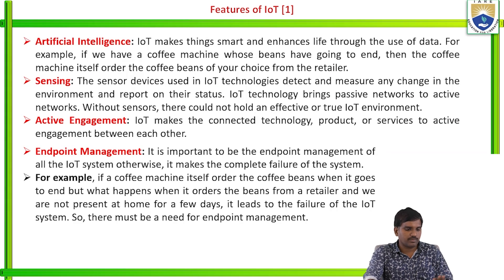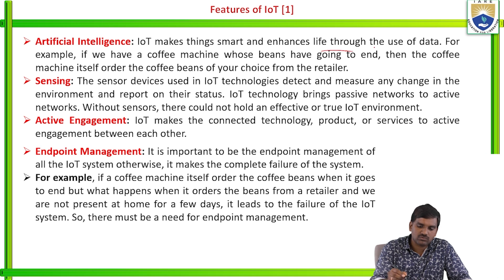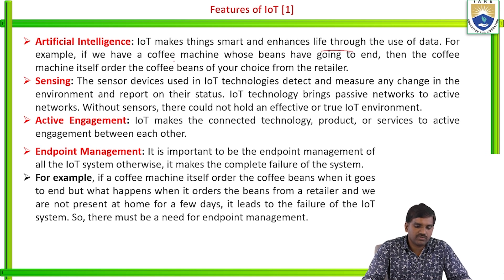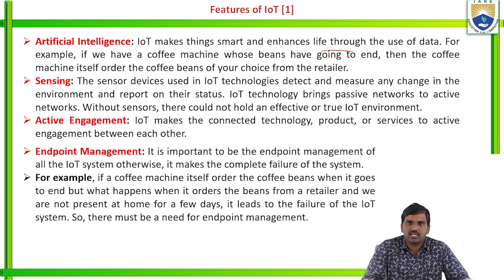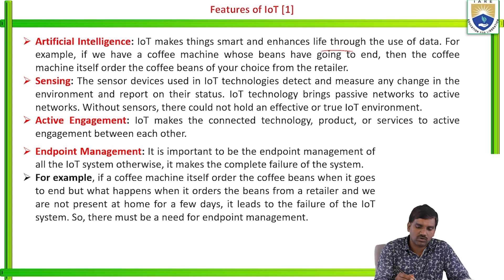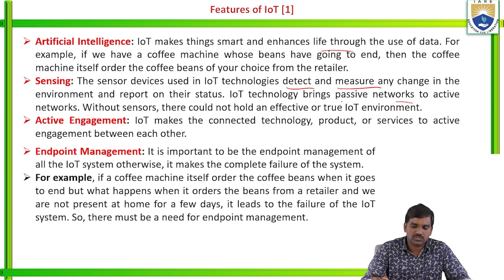Remaining features: artificial intelligence, sensing, active engagement and endpoint management. In terms of artificial intelligence, IoT makes things smart and enhances life through the use of data. For example, if we have a coffee machine and the coffee beans are going to end, the machine automatically sends information to the particular destination — that information may pass automatically with the help of an artificial intelligence system. Sensing: sensor devices used in IoT technologies detect and measure any change in the environment and report on their status. IoT technology brings passive networks to active networks — without sensors, there could not be this technology.